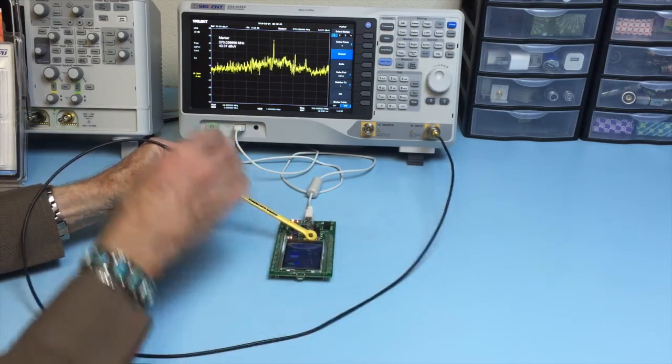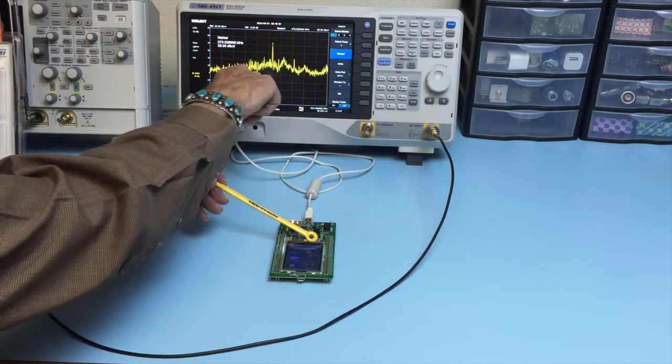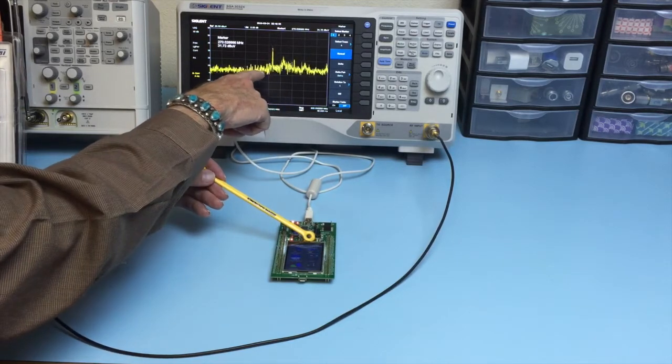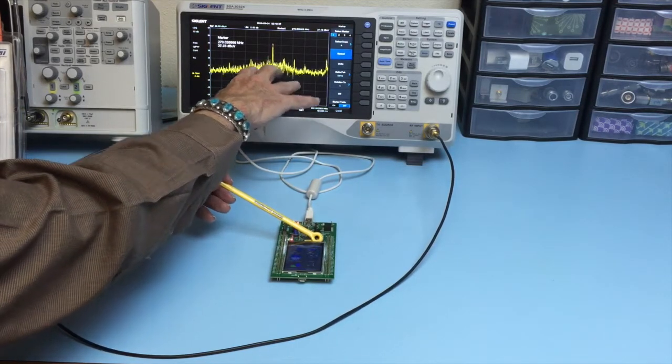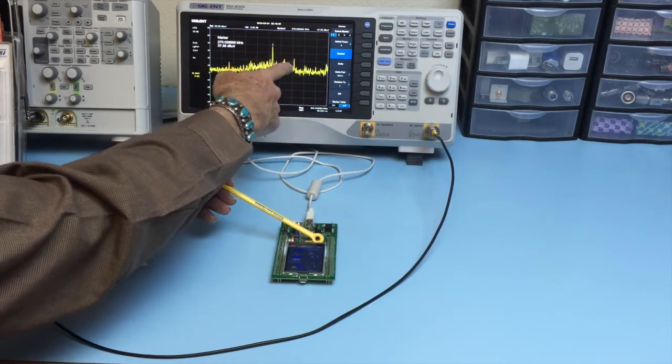Now the difference between narrowband and broadband is this. Broadband is actually when the noise level all pumps up here. Narrowband is these narrow spikes.